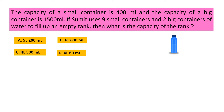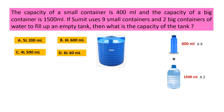This is a small container whose capacity is 400 milliliter, and this is a big container whose capacity is 1500 milliliter. Sumit uses nine small containers and two big containers of water to fill up an empty tank. Here 'and' is a keyword for addition, so we will put plus. That means the capacity of nine small containers plus the capacity of two big containers is equal to the capacity of the tank.